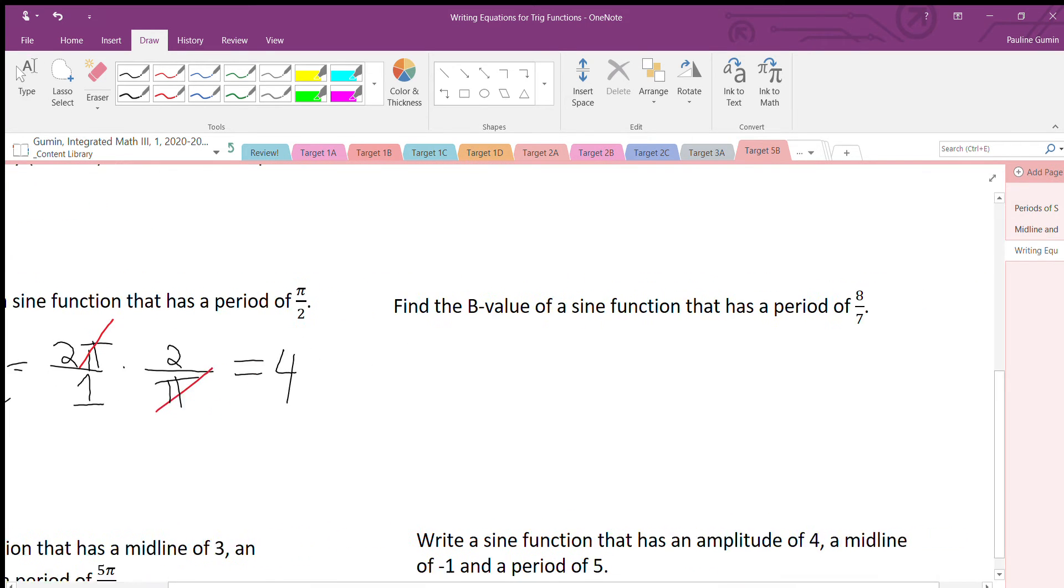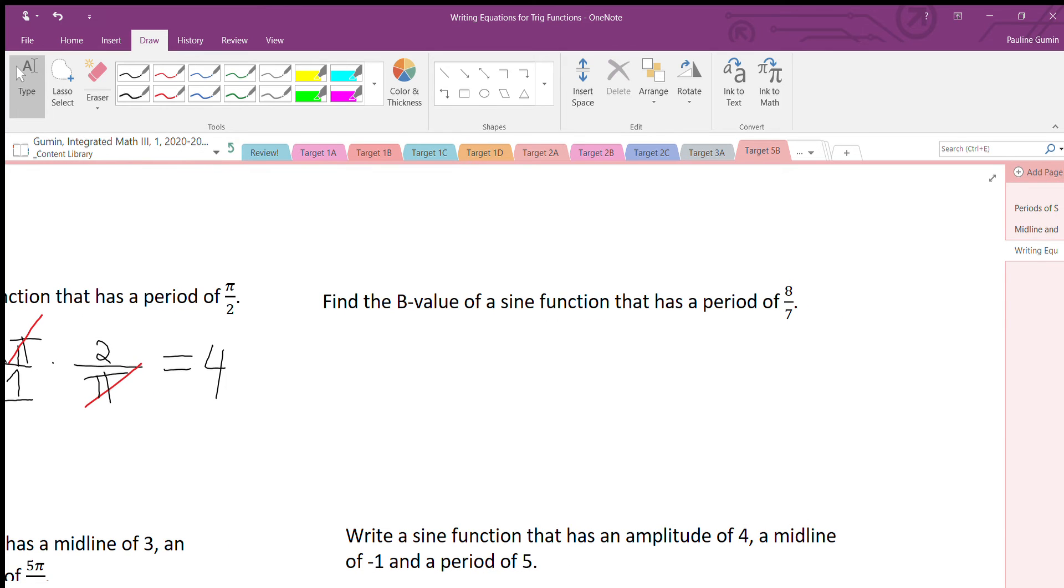Let's try this other one. Let's find the B value, which is the frequency of our function. Once again, we do 2π divided by our period. I'm going to write 2π as a fraction, just to make it easier on myself when I am multiplying by reciprocal. I think in general, I like the look of fractions multiplying by fractions versus just a whole number hanging around.